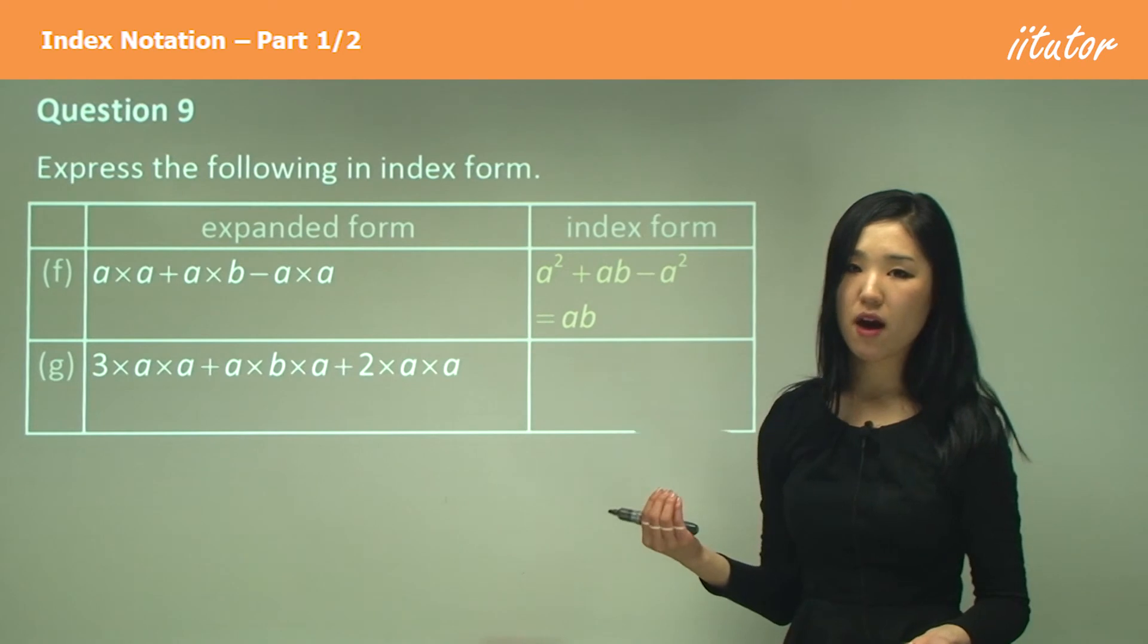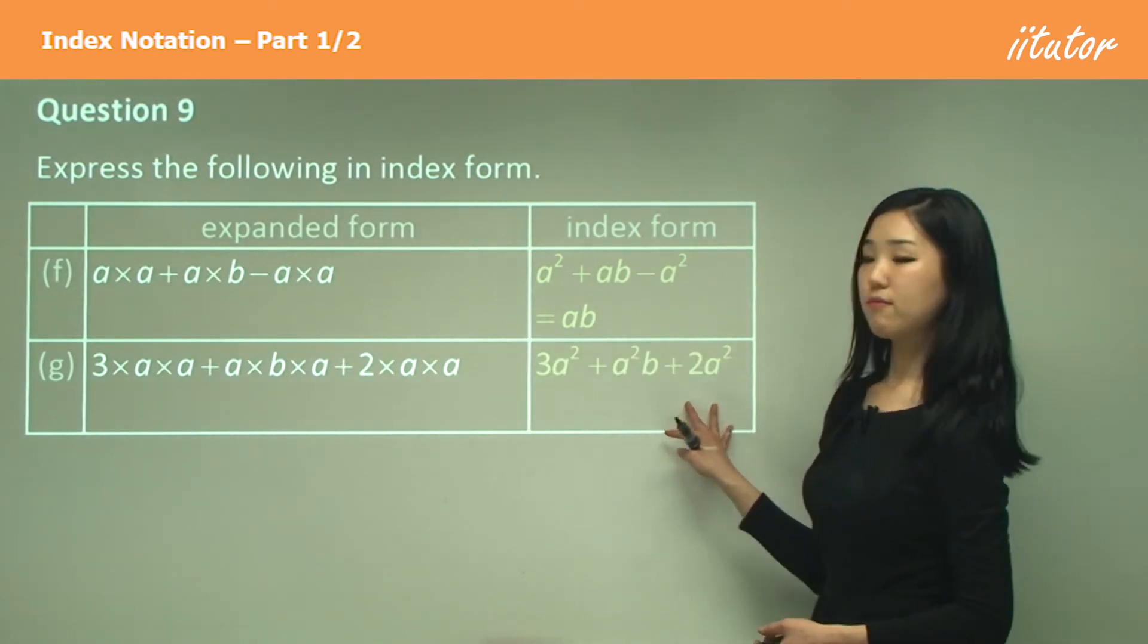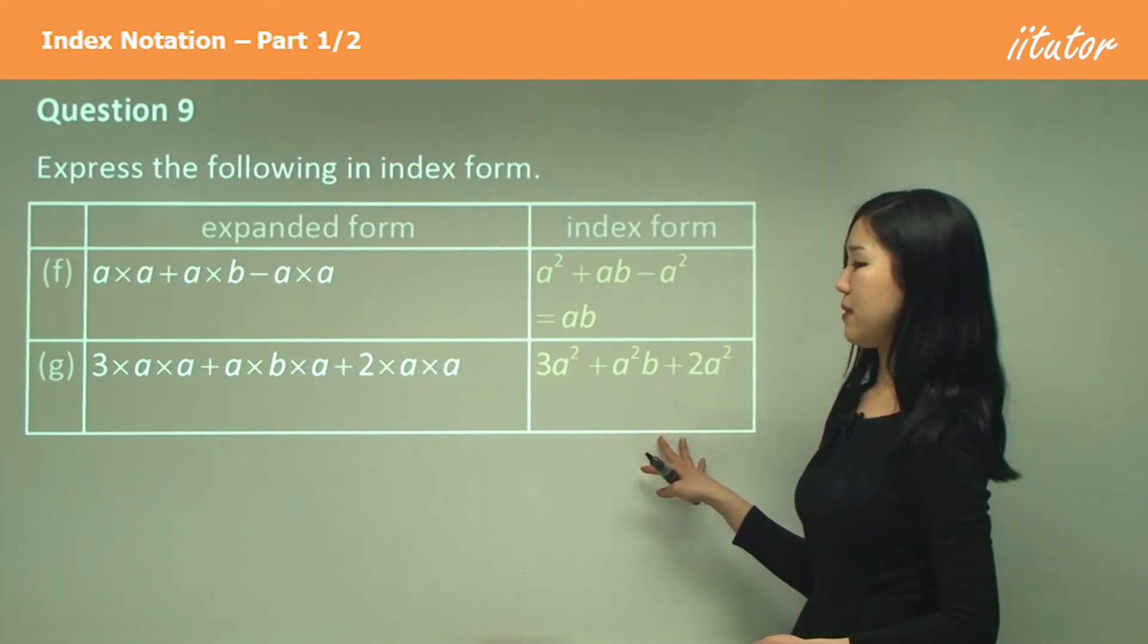So we're just left with ab. So ab is the answer. Count how many of each in each part and write it in index form like this. So hopefully I don't have to explain that again.